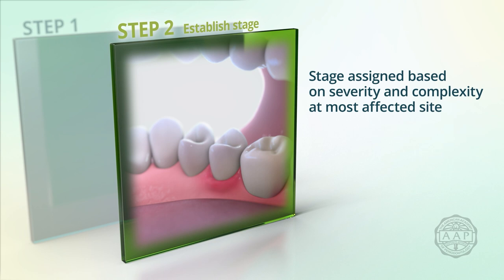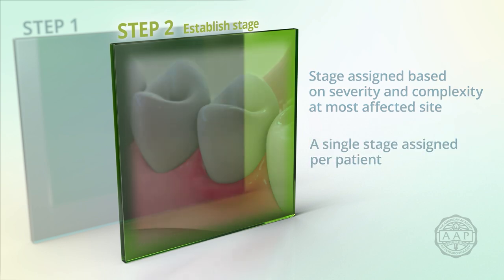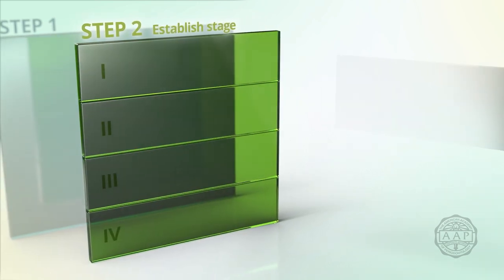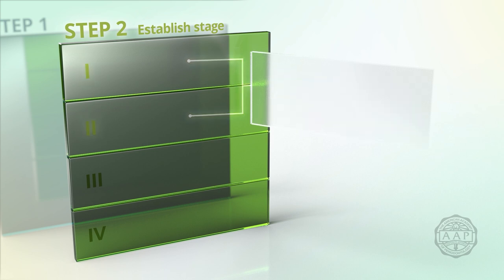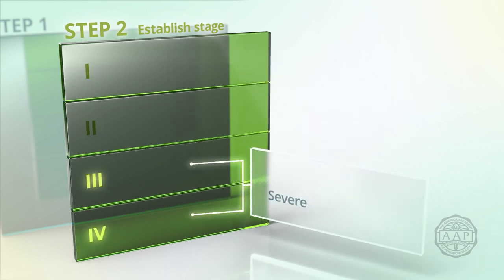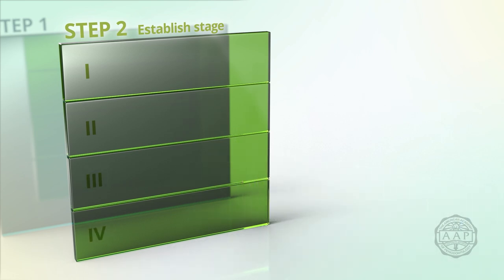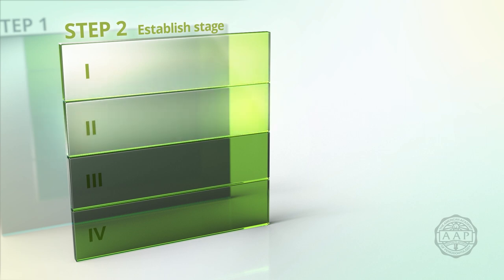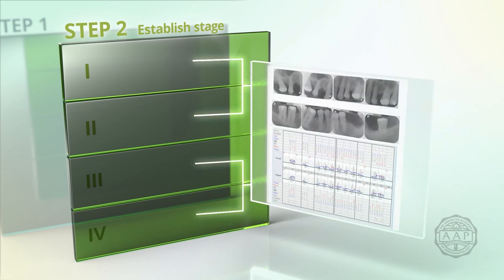The stage is assigned based on the severity and complexity of the disease at the most affected site. A single stage is assigned to a patient. Stages 1 and 2 signify mild to moderate periodontitis in patients who have not lost any teeth due to the disease, whereas stages 3 and 4 indicate severe periodontitis. An assessment of the patient's periodontal chart and radiograph should be used to distinguish between these two groups.